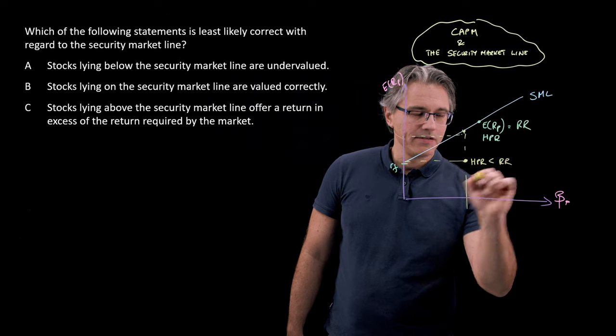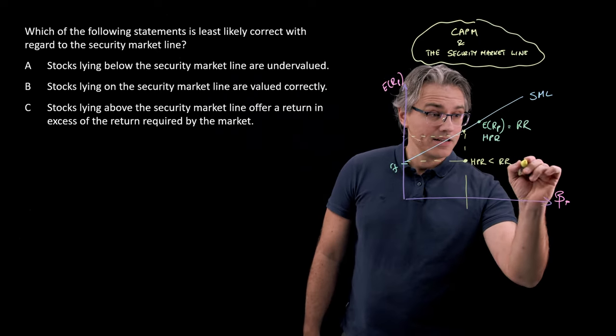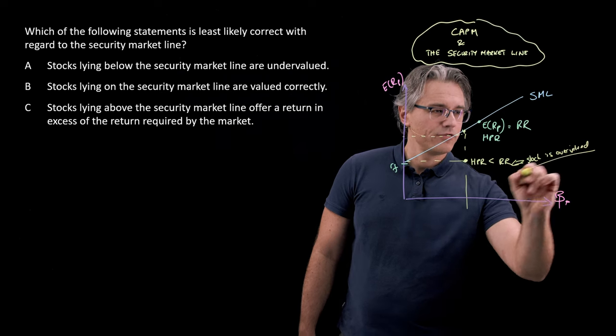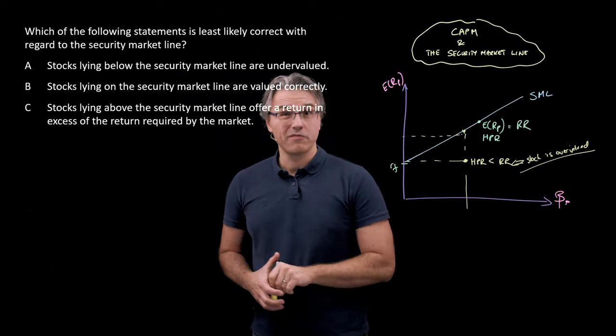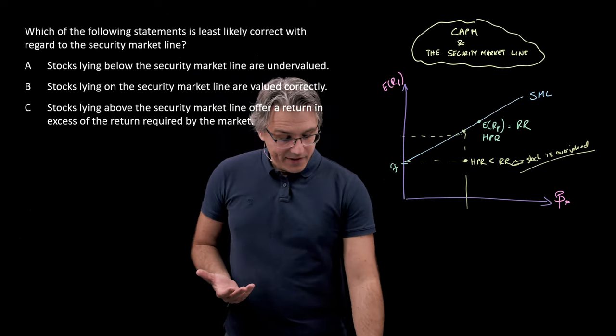So, this is lower than the required rate of return. The reason for this being that this stock is overvalued. It doesn't produce enough yield. It doesn't produce enough return because its price is simply too high.